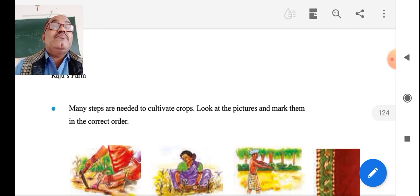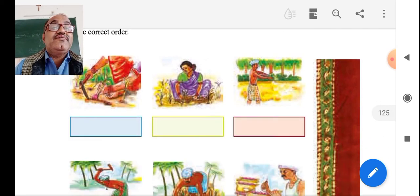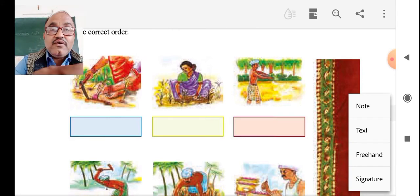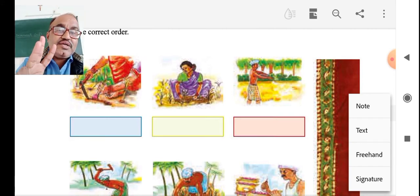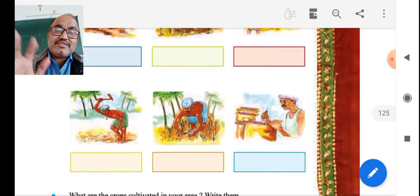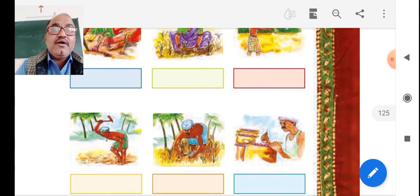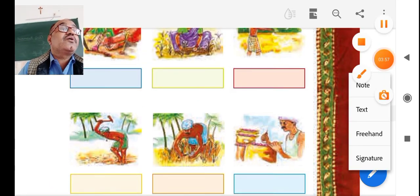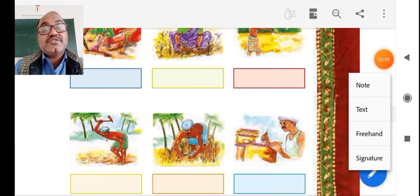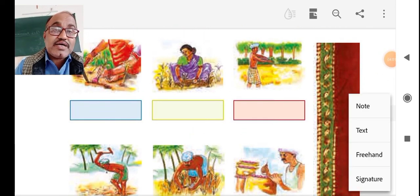Now, Raju's farm, many steps are needed to cultivate the crops. These are the 1, 2, 3, 4, 5, and 6 kind of steps are given of cultivation of the crops. That cultivation of the crops pictures are given here.